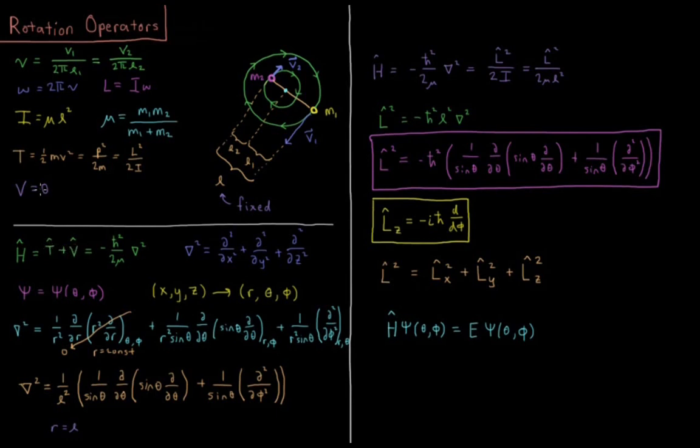So the potential is zero, so that's easy, we're done. The kinetic energy is going to be negative ℏ² over 2 times reduced mass, we're going to use the reduced mass of the system for the mass, times the Laplacian operator, del squared.